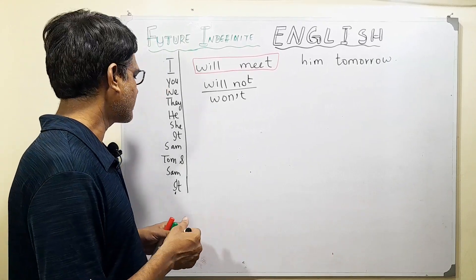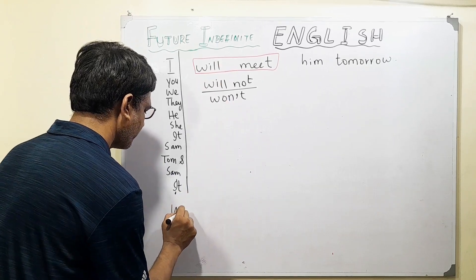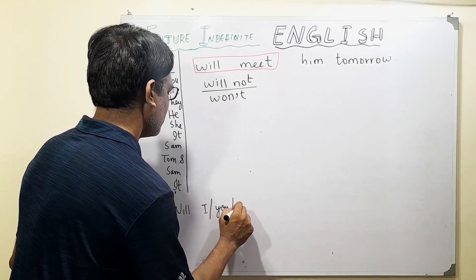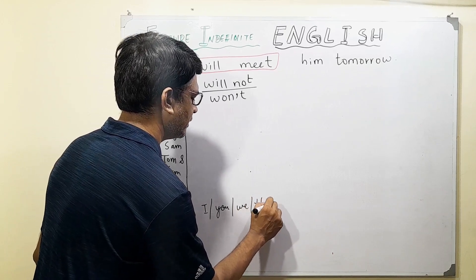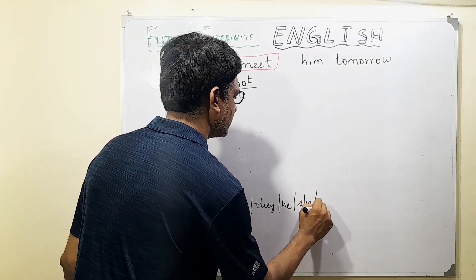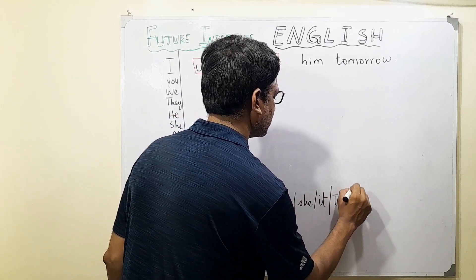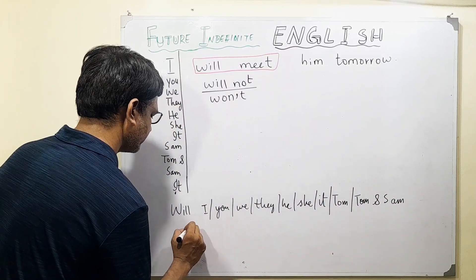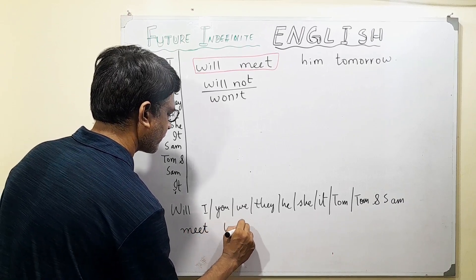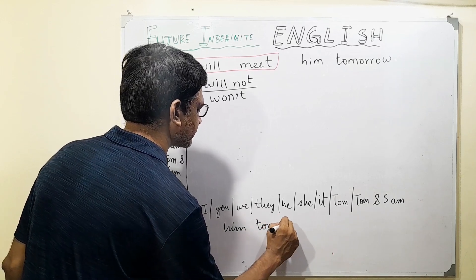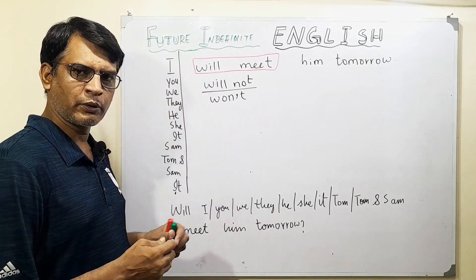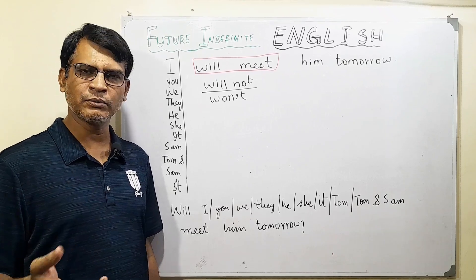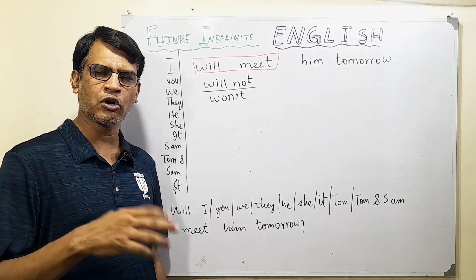How do we make a question? Well, the question is simple — we take out 'will' and bring it to the front. So you say: 'Will I / you / we / they / he / she / it / one individual / two individuals meet him tomorrow?' 'Will she meet him tomorrow?' 'Will it meet him tomorrow?' 'Will Tom meet him tomorrow?' 'Will Tom and Sam meet him tomorrow?'